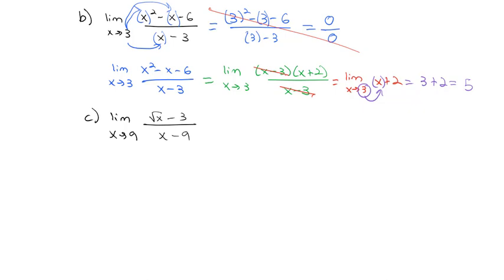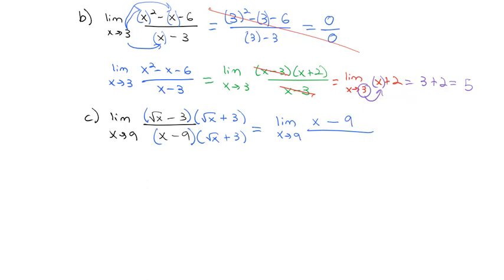Instead, we'll use a trick from pre-calculus: whenever we have a square root and a fraction, we can clear the square root by multiplying top and bottom by the conjugate, changing the sign in the middle. We multiply by (√x+3)/(√x+3). Now we get x-9 in the numerator over (x-9)(√x+3) in the denominator. That allows us to remove the (x-9) discontinuity. If nothing is left in the numerator, it still has 1, so we have the limit as x goes to 9 of 1/(√x+3).